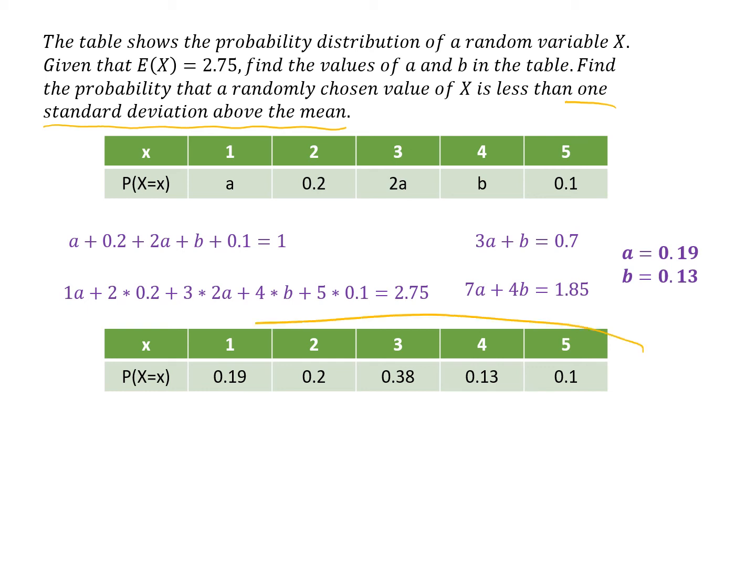So I've popped that information into my calculator, and it gives me the standard deviation of 1.195. So one standard deviation above the mean is 1.195 plus the mean.